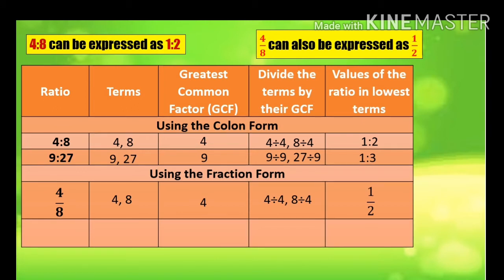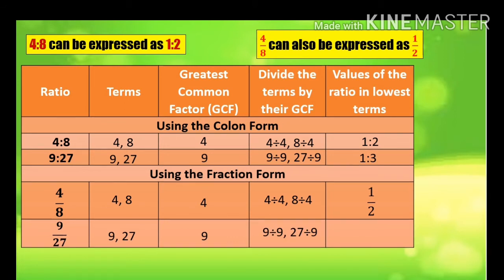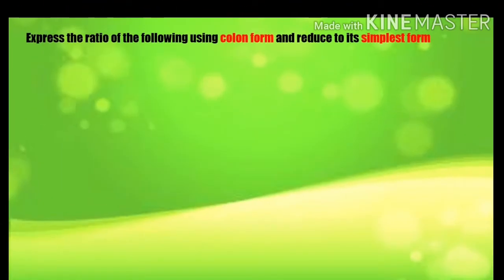I hope you are following. Let's have another example using the fraction form: 9 over 27. What are the terms? The terms are 9 and 27. What is the GCF or the greatest common factor? 9. We are going to divide the terms by their GCF: 9 divided by 9 and 27 divided by 9. The answer would be 1 third or 1 over 3.